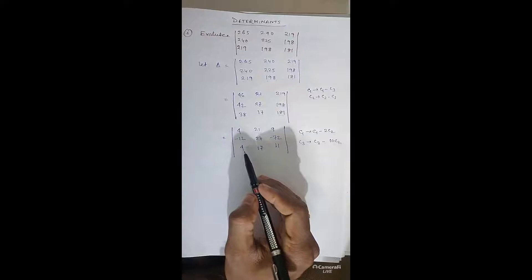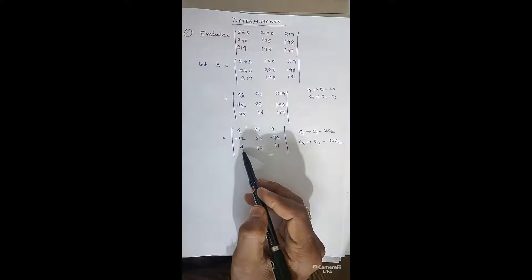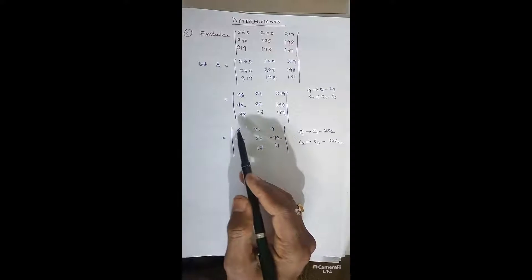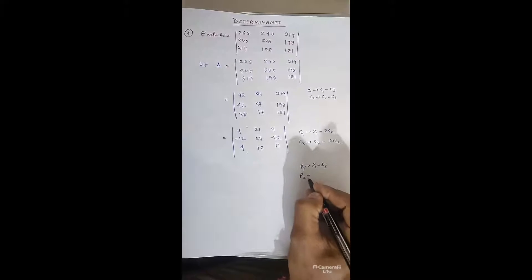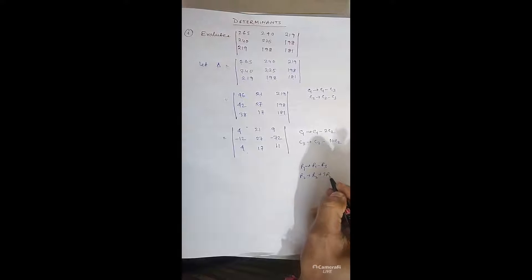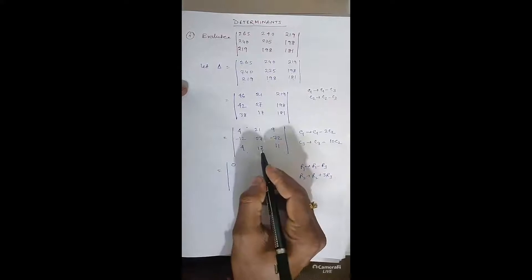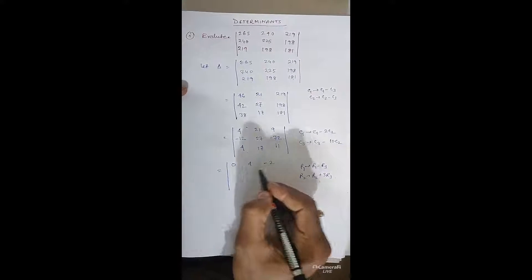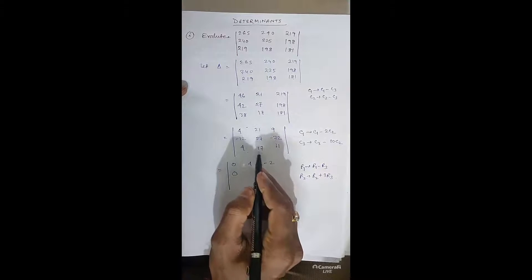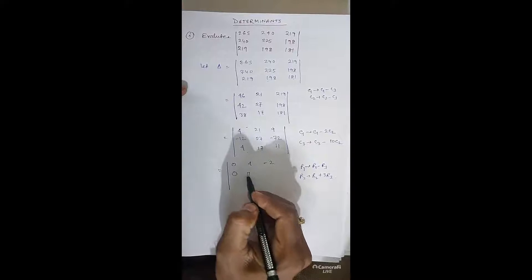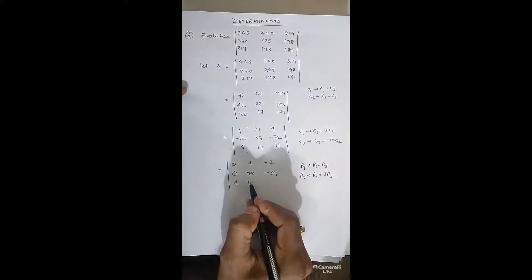Next, if we apply R1 minus R3, the first element becomes 0. If we apply R2 plus 3·R3, another element becomes 0. Our target is to make the maximum number of zeros in any row or column. Applying R1 minus R3: row 1 becomes 0, 4, −2. Applying R2 plus 3·R3 gives: 0, 78, −39 (since 27+51=78 and −72+33=−39). Row 3 remains: 4, 17, 11.